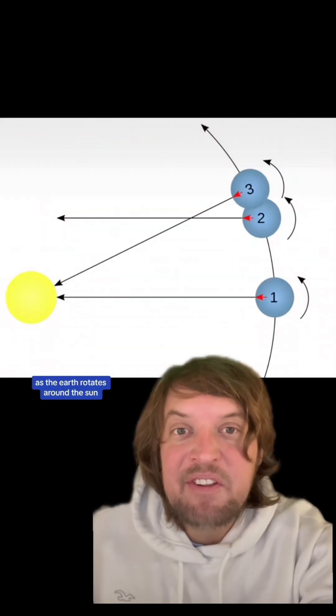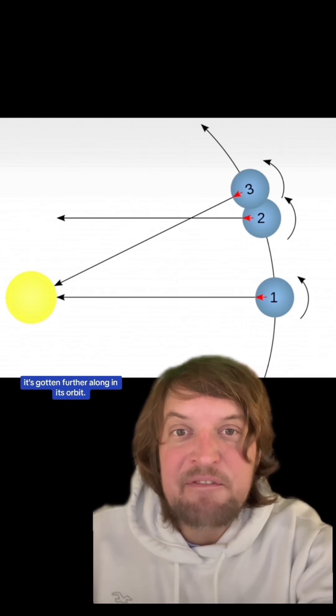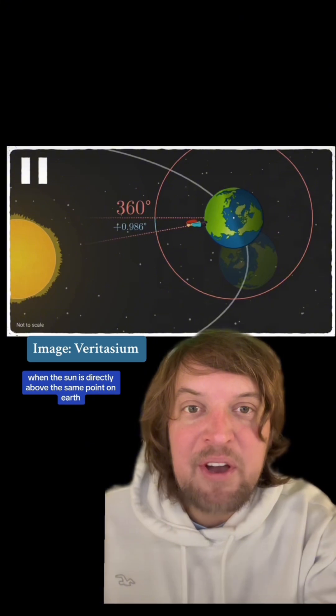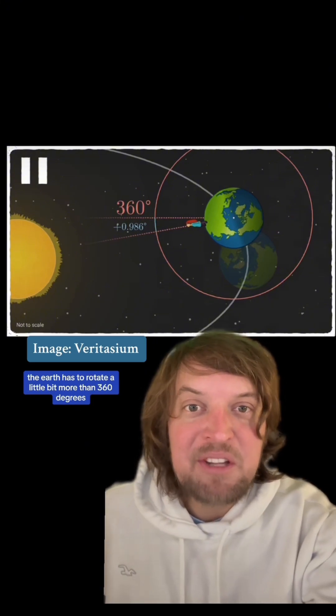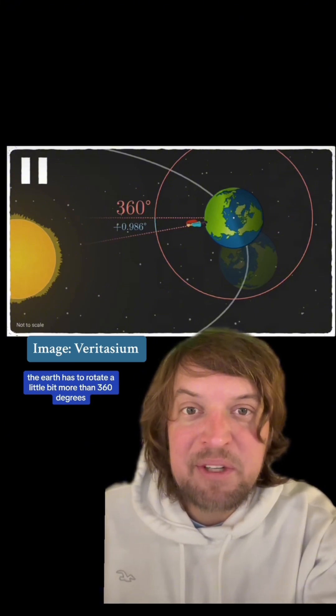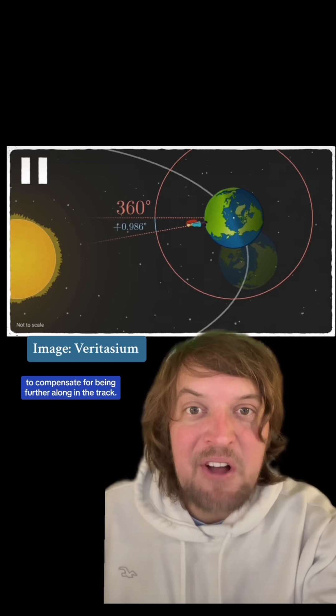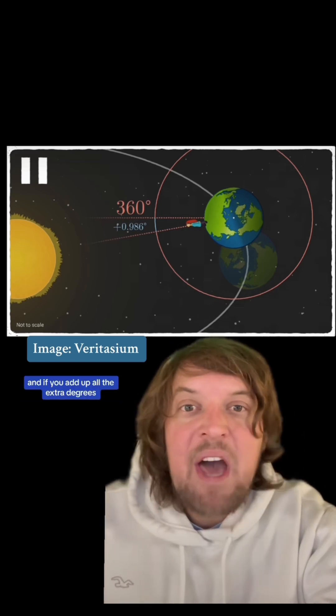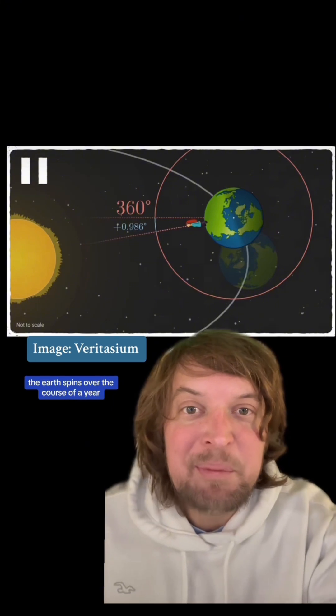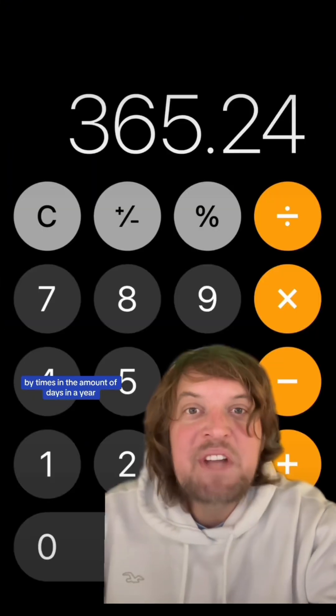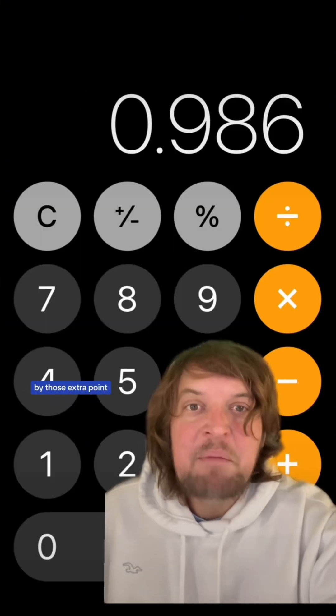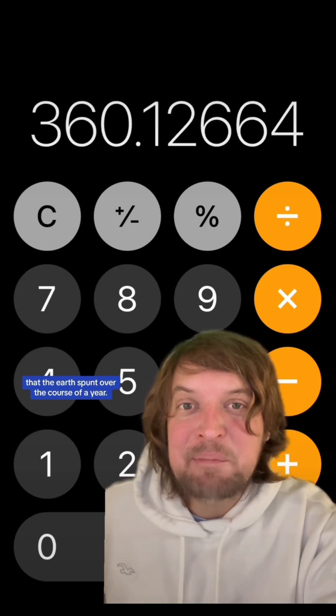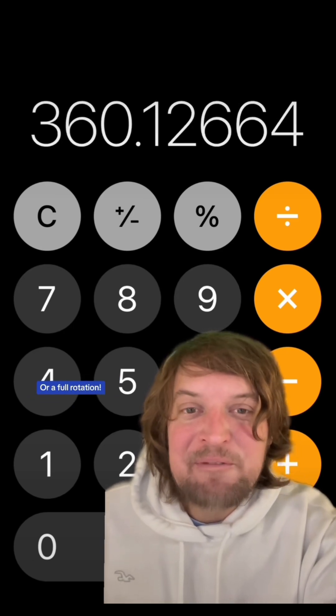From one day to the next as the earth rotates around the sun it's gotten further along in its orbit. So in order for noon to be when the sun is directly above the same point on earth, the earth has to rotate a little bit more than 360 degrees to compensate for being further along in the track. It has to rotate just shy of an extra degree a day. And if you add up all the extra degrees the earth spins over the course of a year by multiplying the amount of days in a year by those extra 0.986 degrees, you get 360 degrees that the earth spun over the course of a year or a full rotation.